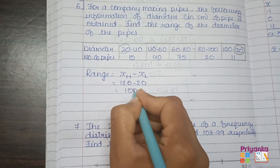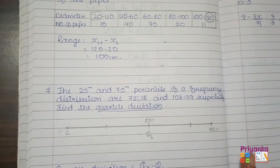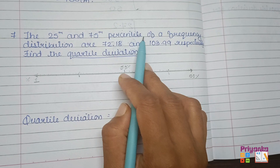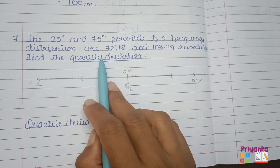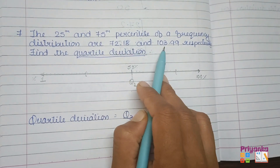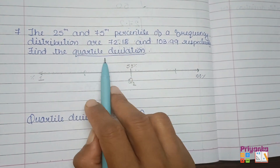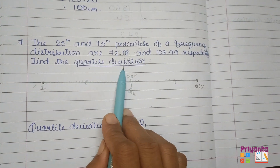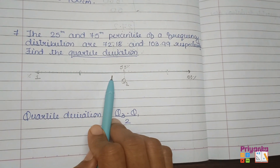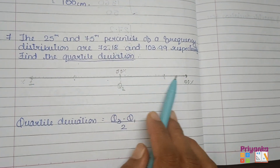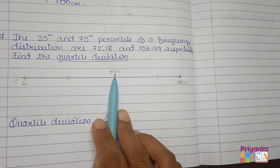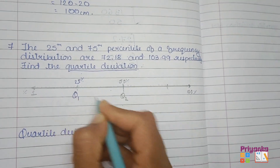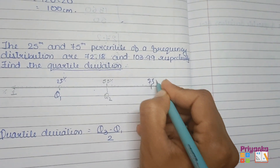Question 7: the 25th and 75th percentile of a frequency distribution are 72.80 and 103.99 respectively. Find the quartile deviation. Remember from the last chapter: out of 1 to 100 percent, the 50th percentile is Q2, the 25th percentile is Q1, and the 75th percentile is Q3.